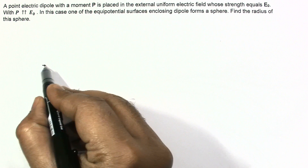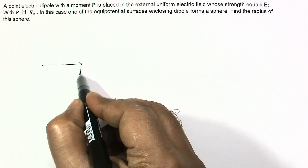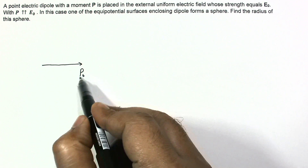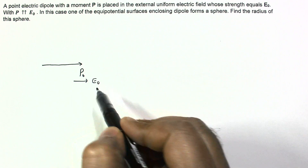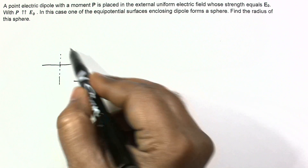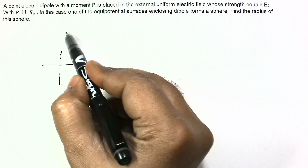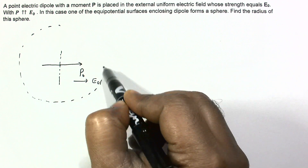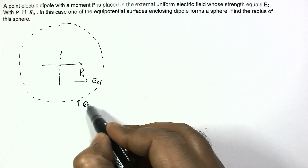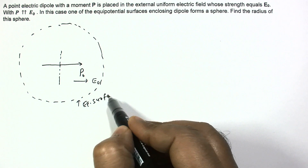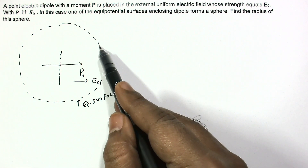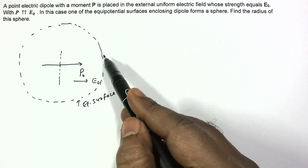Suppose the dipole is in this direction and the electric field E₀ is in this direction. This is an equipotential surface — if you enclose this dipole, then the equipotential surface will be something like this. And since it is an equipotential surface, it will be at equal potential at each point, and the electric field will be normal to this equipotential surface.